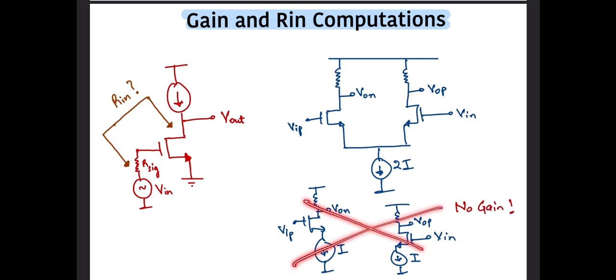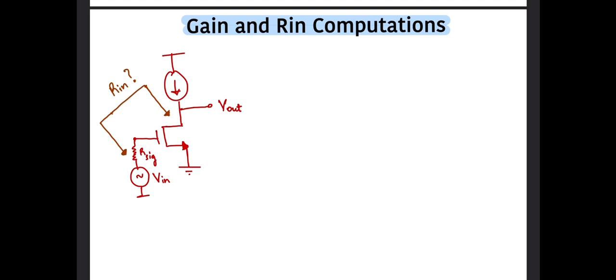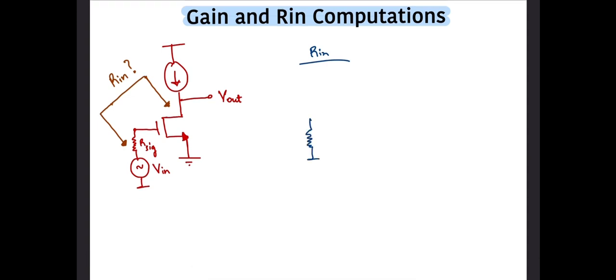All right, let's get to the common source amplifier now. As in a common source amplifier, we have an input signal applied at the gate, and the output is observed at the drain. For this illustration, let's assume that the input voltage source has a series resistance of R_sig along with it. The problem at hand is to compute the input impedance across the input and the output nodes.